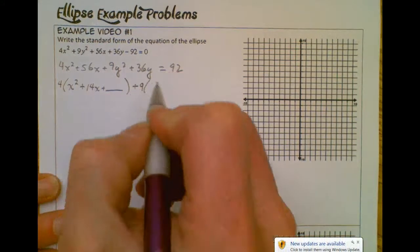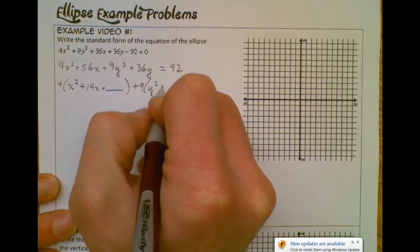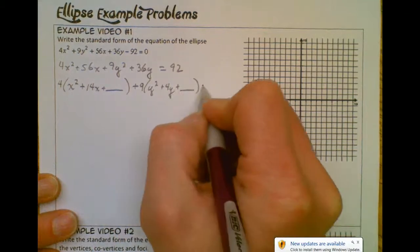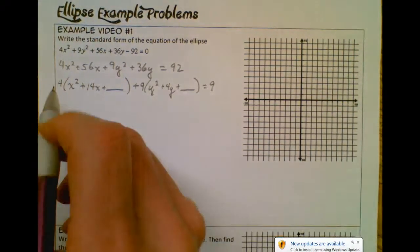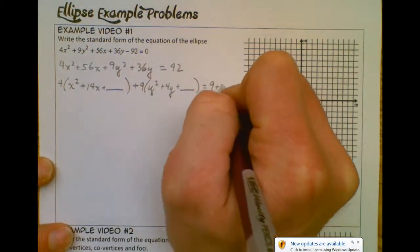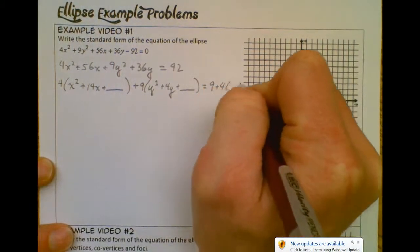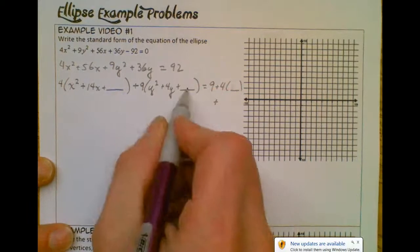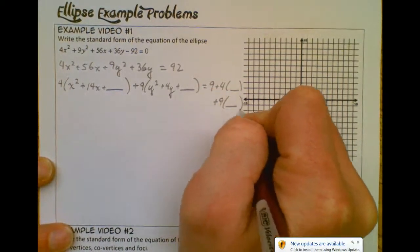And then I'm going to factor out a 9. And then I've got y squared plus 4y, again, plus something over here. And then I've got my 92 on this side. Now, I'm adding 4 times whatever goes in here. So then I'm going to have 4 times whatever goes in that spot plus 9 times whatever goes in this spot. So 9 times whatever goes in that spot.